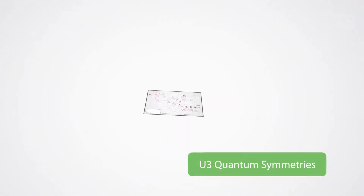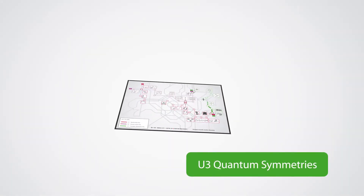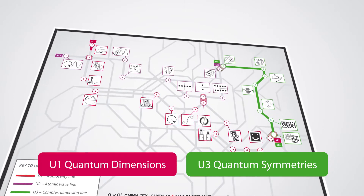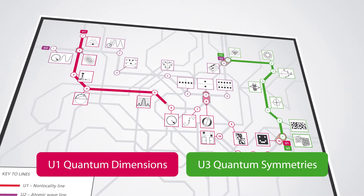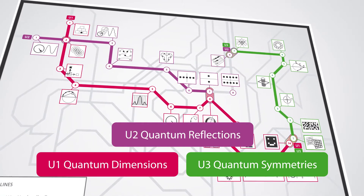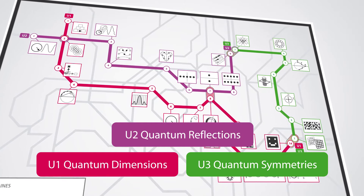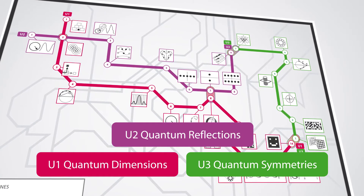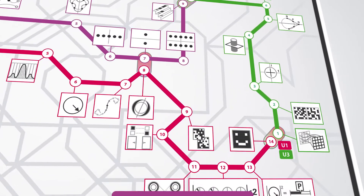Follow me into my dimension. In combination with the U1 quantum dimensions and U2 quantum reflections, the U3 quantum symmetries reveals a topological view on the standard model of elementary particle physics with symmetry groups U1, U2 and U3.